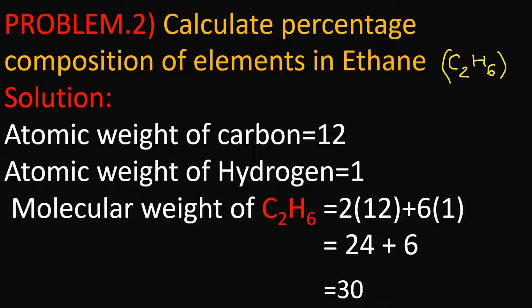Next problem: Calculate the percentage composition of elements in ethane, C2H6. The atomic weights of carbon and hydrogen are 12 and 1. In the formula C2H6: 2 carbons = 2 × 12 = 24, and 6 hydrogens = 6 × 1 = 6. So the molecular weight of ethane is 24 + 6 = 30.